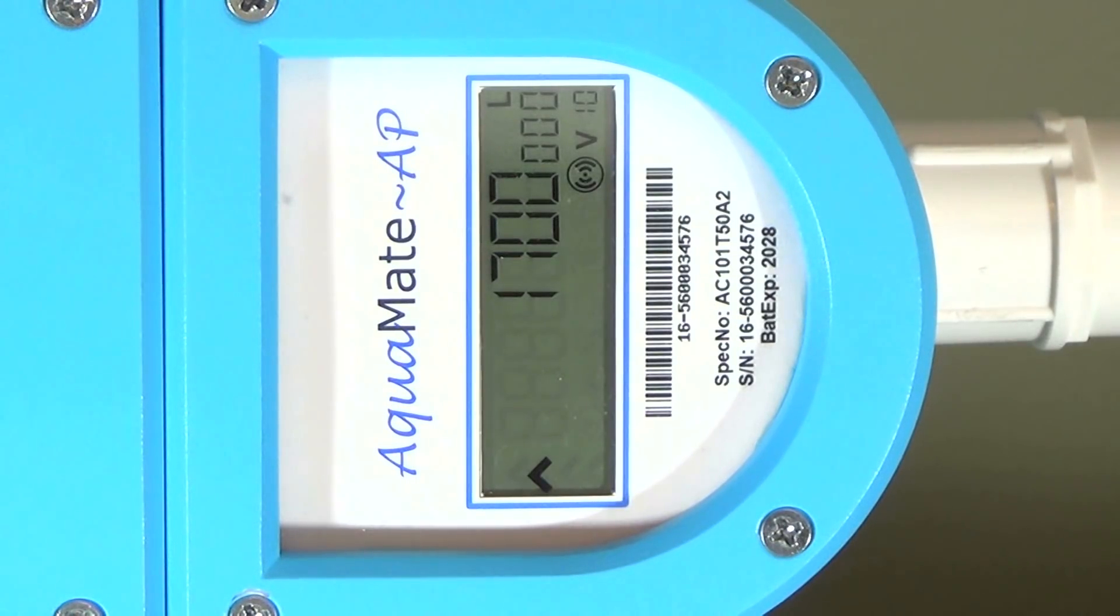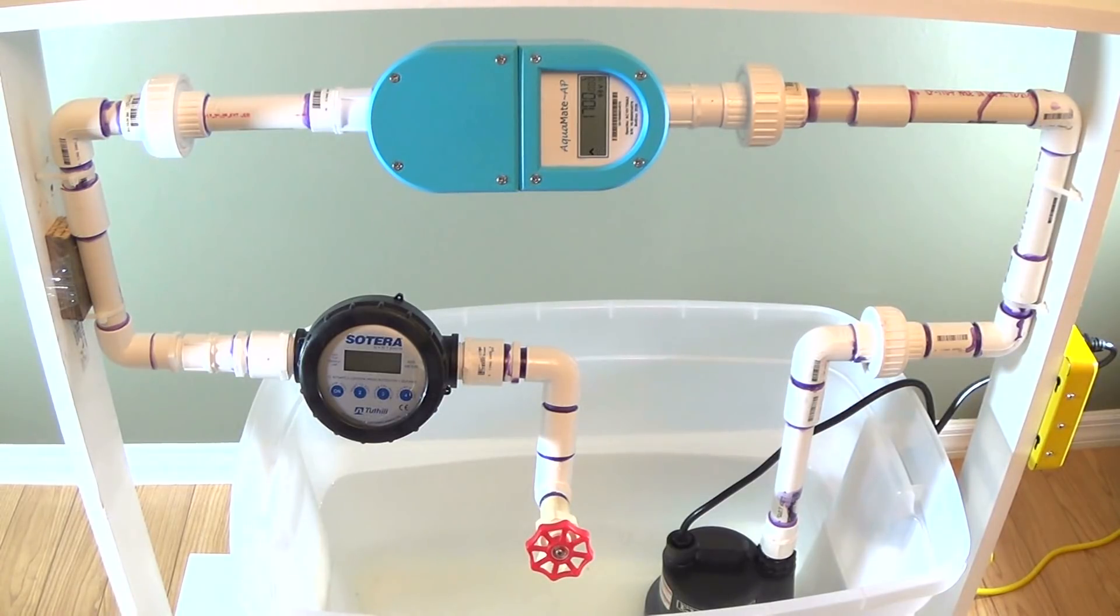In this setup, we see that Aquamate AP has available balance of 50 liters and lifetime usage of 1,700,000 liters. We'll now have the actual water run and see how Aquamate AP works.